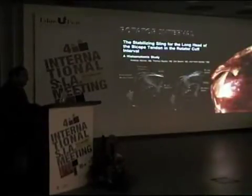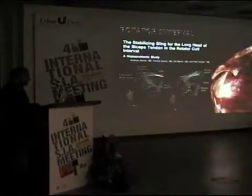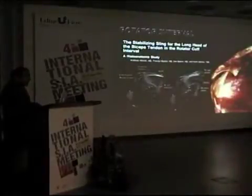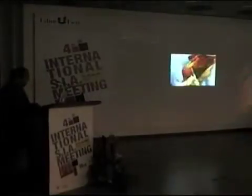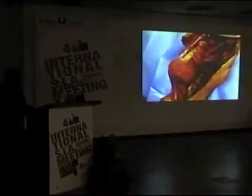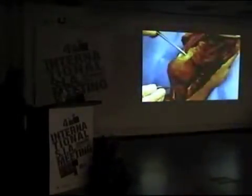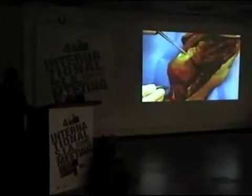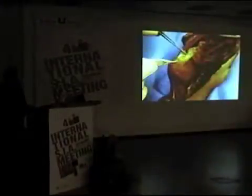The two bundles open as a fan in their insertion from the lesser tuberosity to the greater tuberosity, forming a stabilizing sling for the long head of the biceps tendon in the rotator cuff, as Werner described in his histoanatomic study. Here is a video of this rotator interval showing the different fascicles of the coracohumeral ligament. When we move the different bundles, they become tensed in internal rotation, and we can see the long head of the biceps tendon below the ligament.